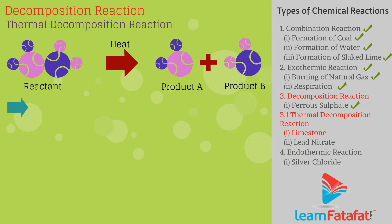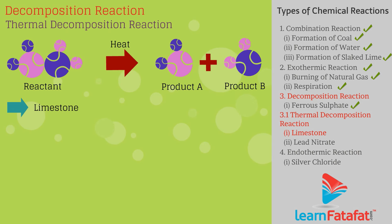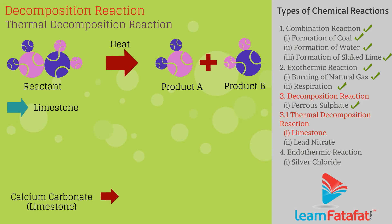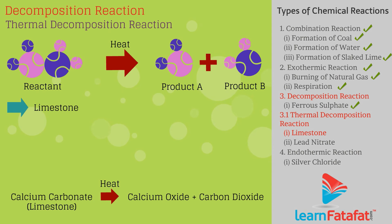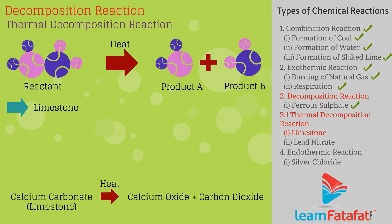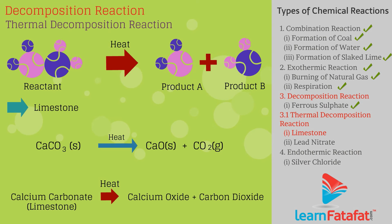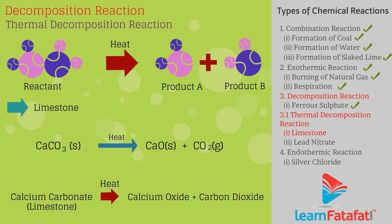Example 1: Decomposition of calcium carbonate to calcium oxide and carbon dioxide. Calcium oxide is lime or quick lime, used in the manufacture of cement. CaCO₃ → CaO + CO₂ (on heating).